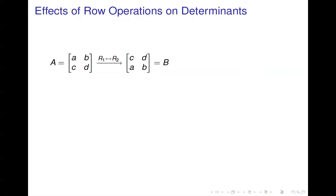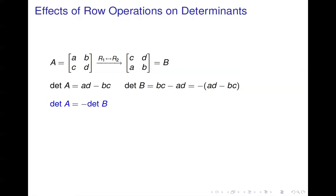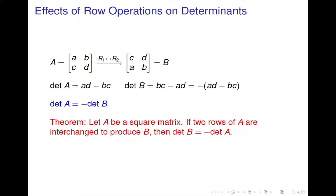The first thing we'll look at is the effect of swapping rows. In the example here, I just swapped the rows — I call the first matrix A and the swapped matrix B. The determinant of A is AD minus BC, and the determinant of B is BC minus AD, which is the negative of AD minus BC. So the determinant of A equals negative the determinant of B. This holds true no matter what size your matrix is — if you exchange two rows of A to produce B, then det(B) equals negative det(A).